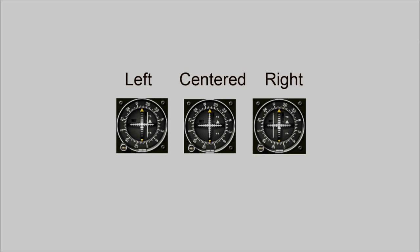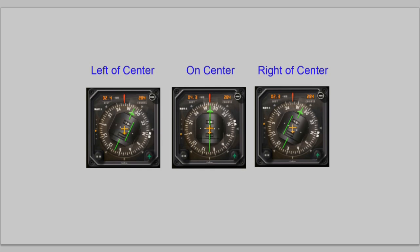Here are some shots of what the VOR indicator looks like in a Cessna, Piper, or other small airplane. The needle is deflected to the left, so we are too far right — we'll need to turn towards the needle. Here we are on a perfect approach. And if we're too far left, the needle is deflected to the right, so we again turn towards the needle.